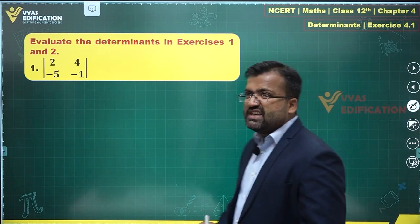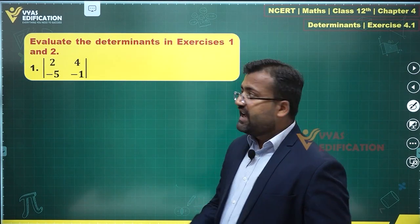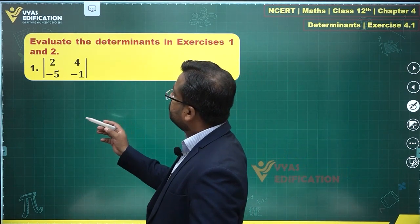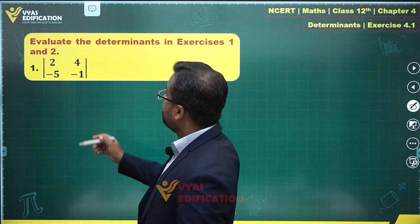Finding the value of this determinant does not seem very difficult actually and what do we have over here? This is a 2 by 2 determinant.